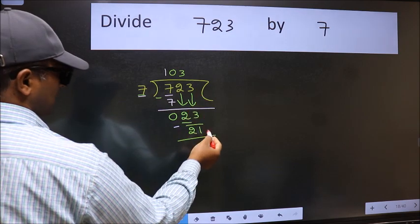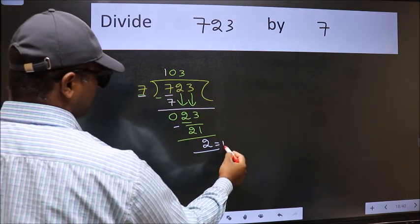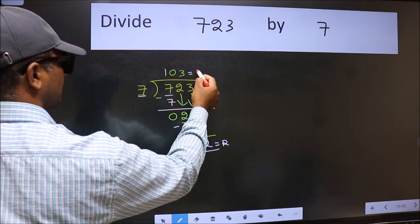No more numbers to bring down. So we stop here. This is our remainder and this is our quotient.